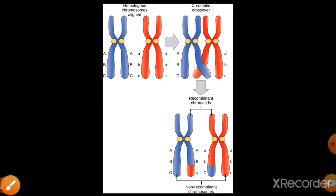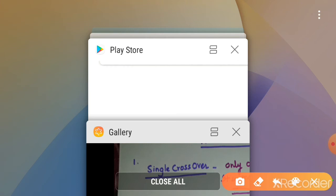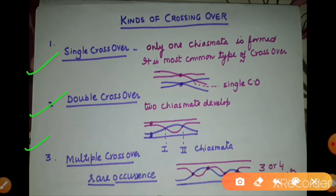Crossing over has different types depending on how many chiasmata are formed. Single crossing over, where only one chiasma is formed, is the most common type. Double crossing over involves two chiasmata forming simultaneously, and this type of gamete is rare. Multiple crossing over, where more than two crossovers occur — possible when the chromosome is very long — is the rarest type.